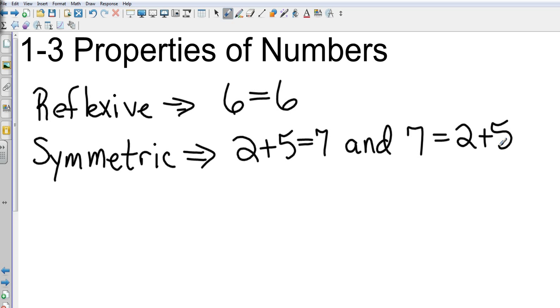Two plus five equals seven, and then I could flip that around to be seven equals two plus five. So it would be the exact same value.